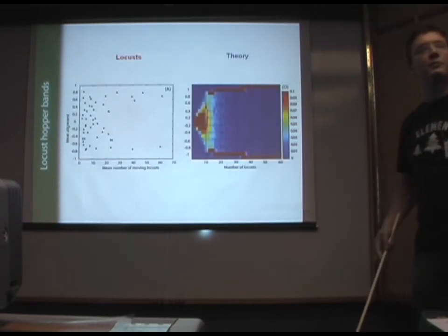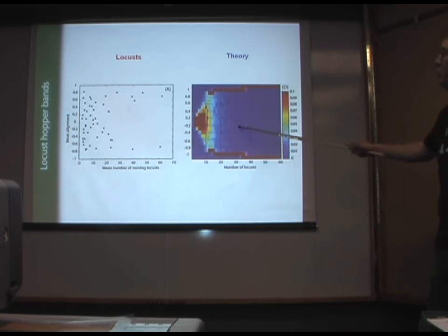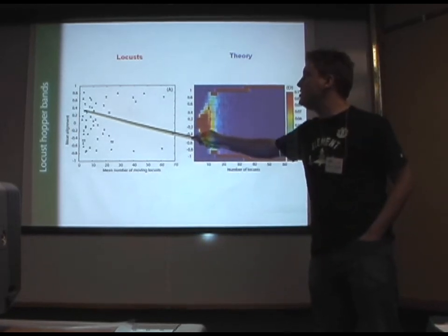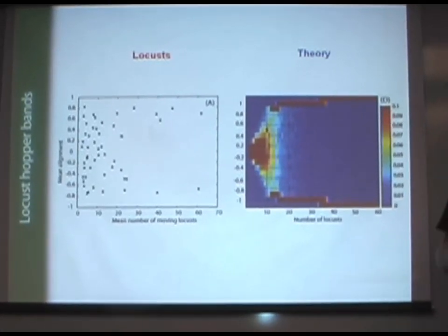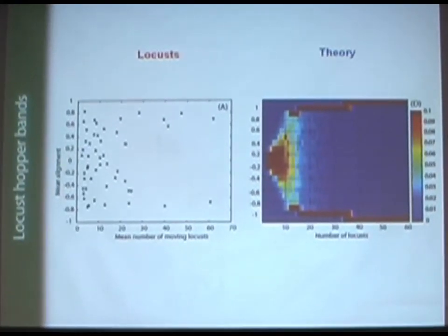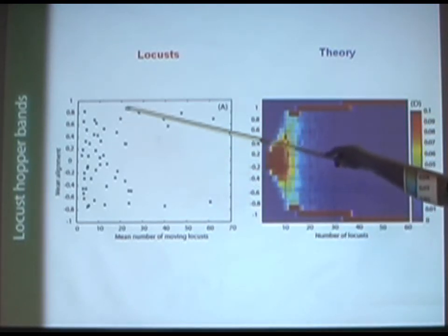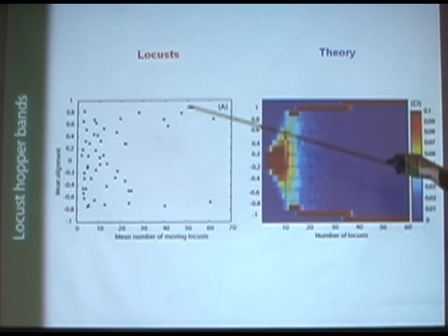And we found a remarkable similarity, actually, between this very simple theory and the bifurcation that you get within these real experiments. Each of these points, by the way, is the average of eight hours of tracking. And we're tracking five frames a second, so we're condensing a lot of information down to get each of these points, which is an eight-hour experiment.